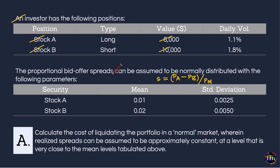Our end goal is to arrive at the liquidity-adjusted VAR for this portfolio. Let's begin on a simple note by assuming a normal market — one in which bid-offer spreads can be treated as largely certain and predicted to a high level of confidence. This first question is about calculating the cost of liquidating this portfolio in a normal market where realized spreads can be assumed to be approximately constant at the mean levels.